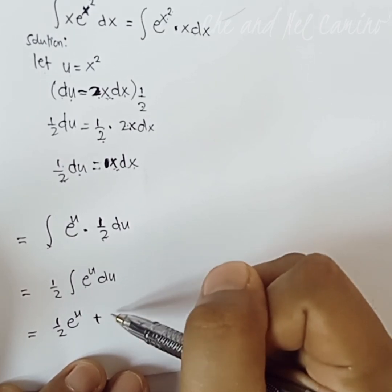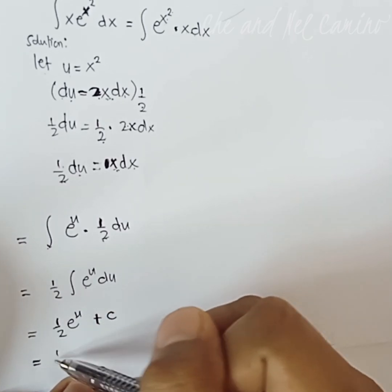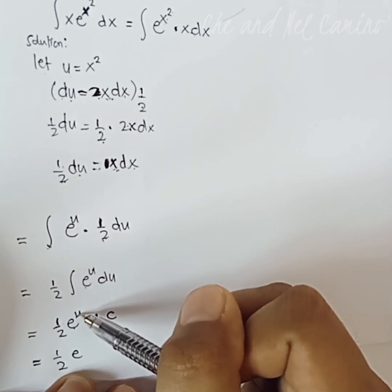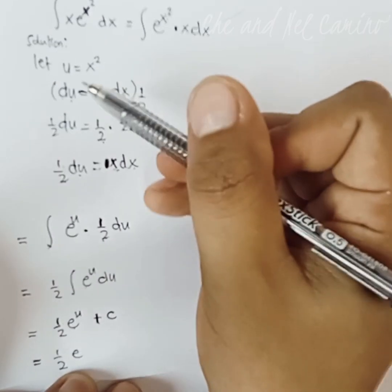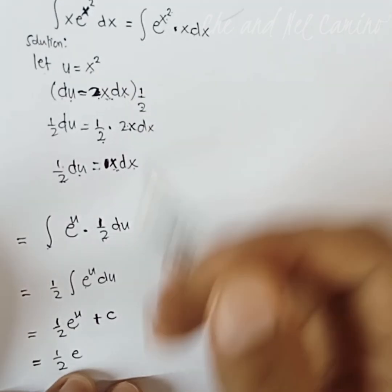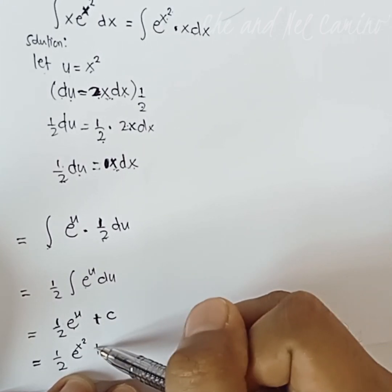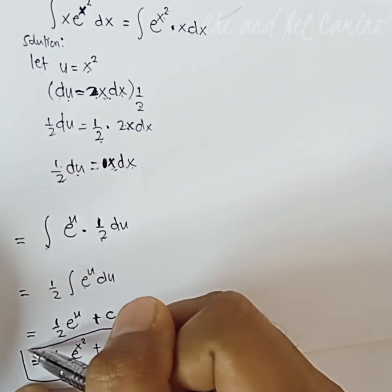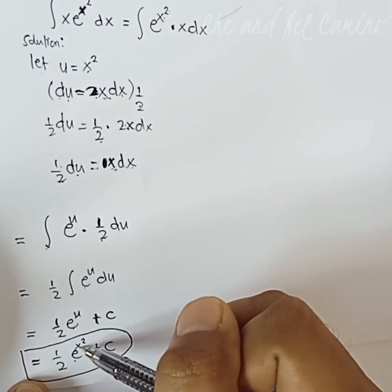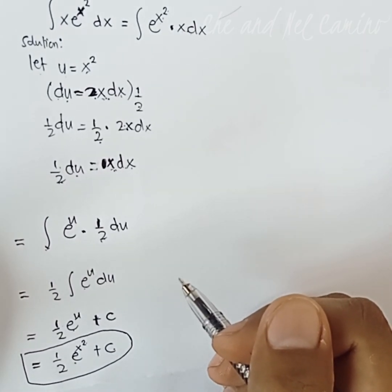Since we have integrated, we add the constant of integration C. We copy one half e to the power of u, then replace u with x squared. Our final answer is one half e to the power of x squared plus C.